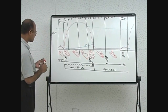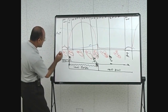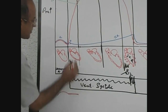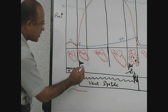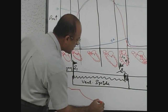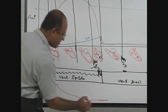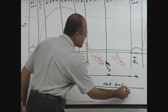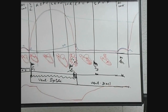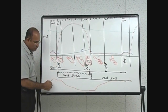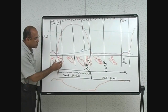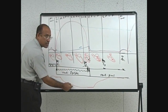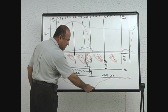Now correlating these with volume changes within the ventricle: with atrial contraction, volume in the ventricle increases. During isovolumetric contraction, volume remains the same. In the rapid ejection phase, ventricular volume decreases rapidly, and in the slow ejection phase it decreases further.